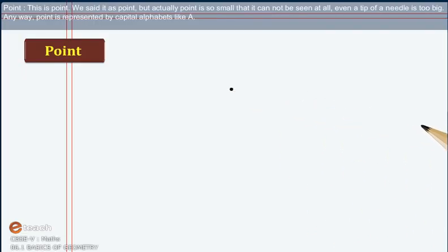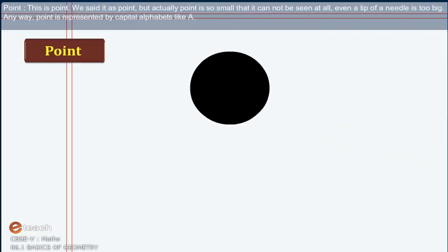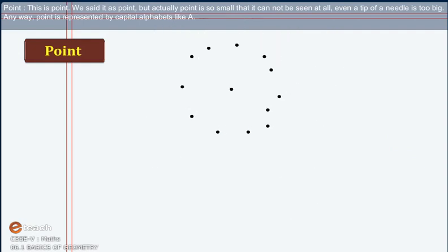Point: This is point. We said it as point but actually point is so small that it cannot be seen at all. Even a tip of a needle is too big. Anyway, point is represented by capital alphabets like A.